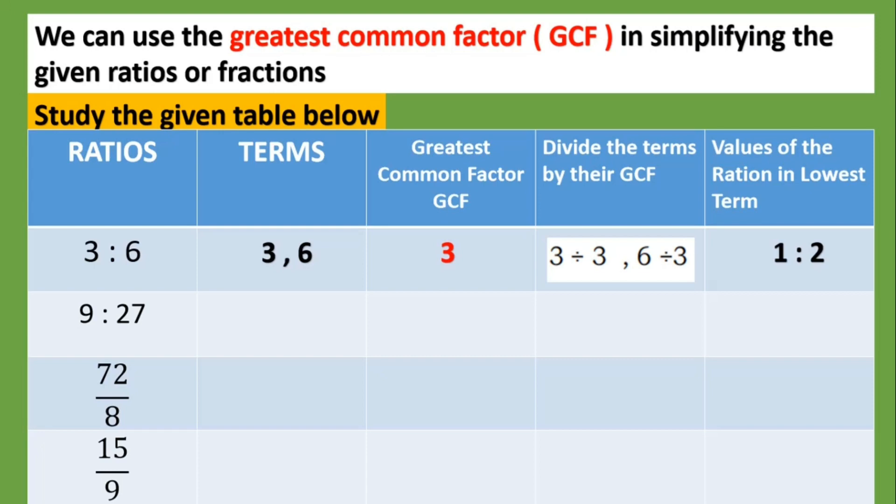Next, 9:27. The terms are nine and twenty-seven. Greatest common factor is nine. So divide the terms by their GCF, nine divided by nine, and twenty-seven divided by nine. So the answer is 1:3, which is the lowest term.